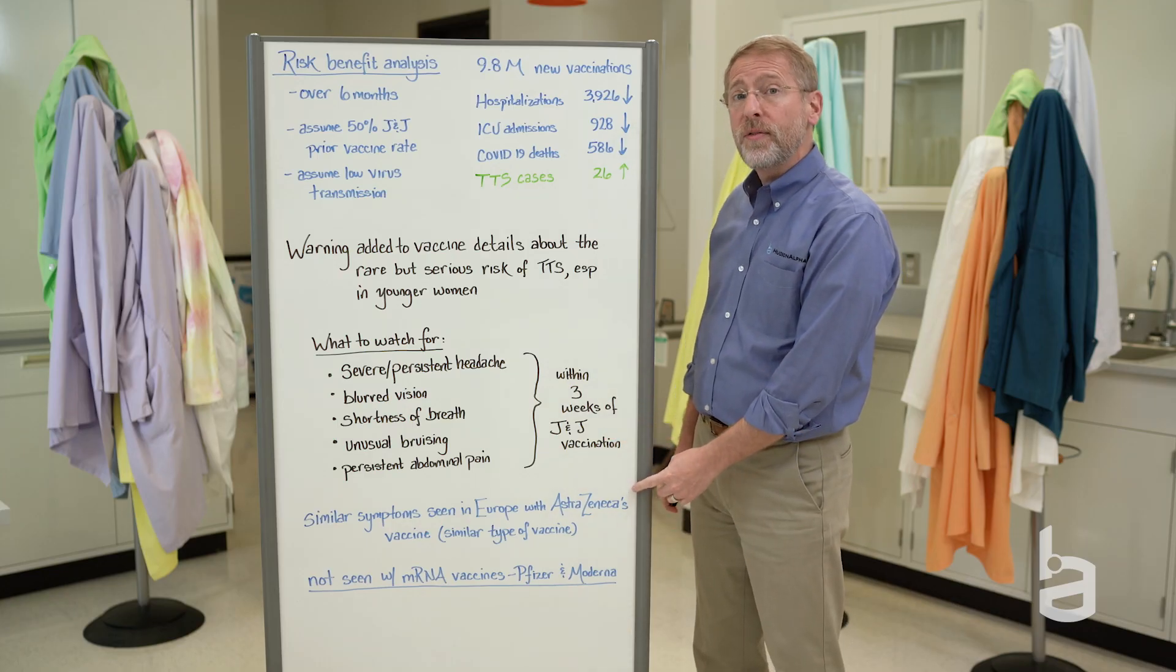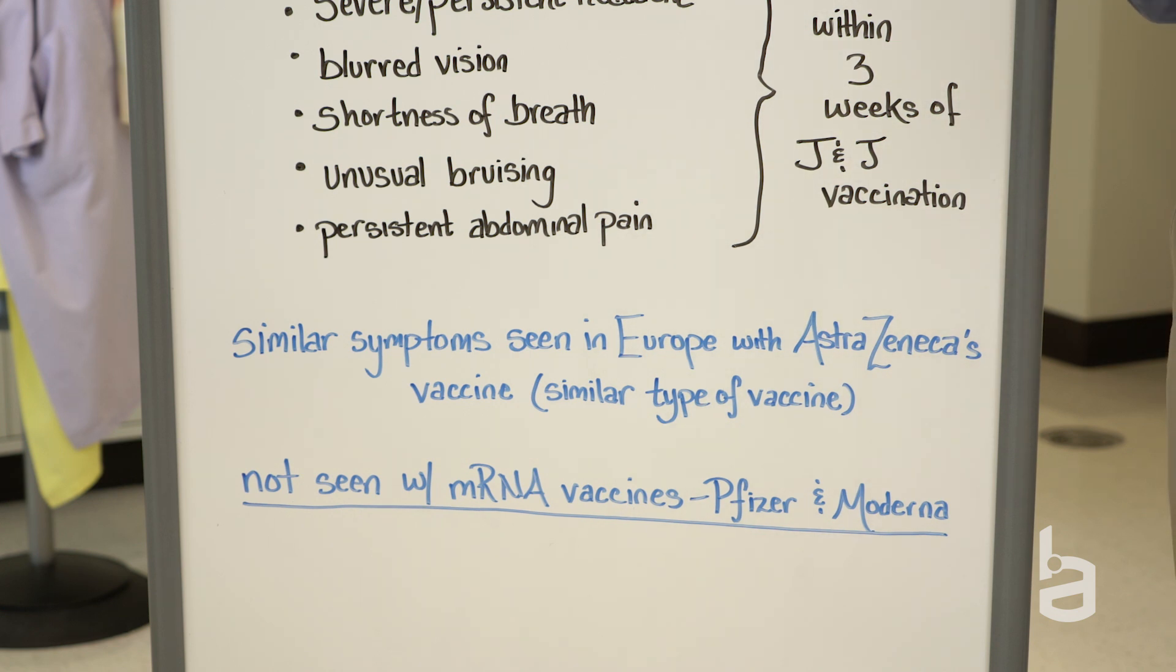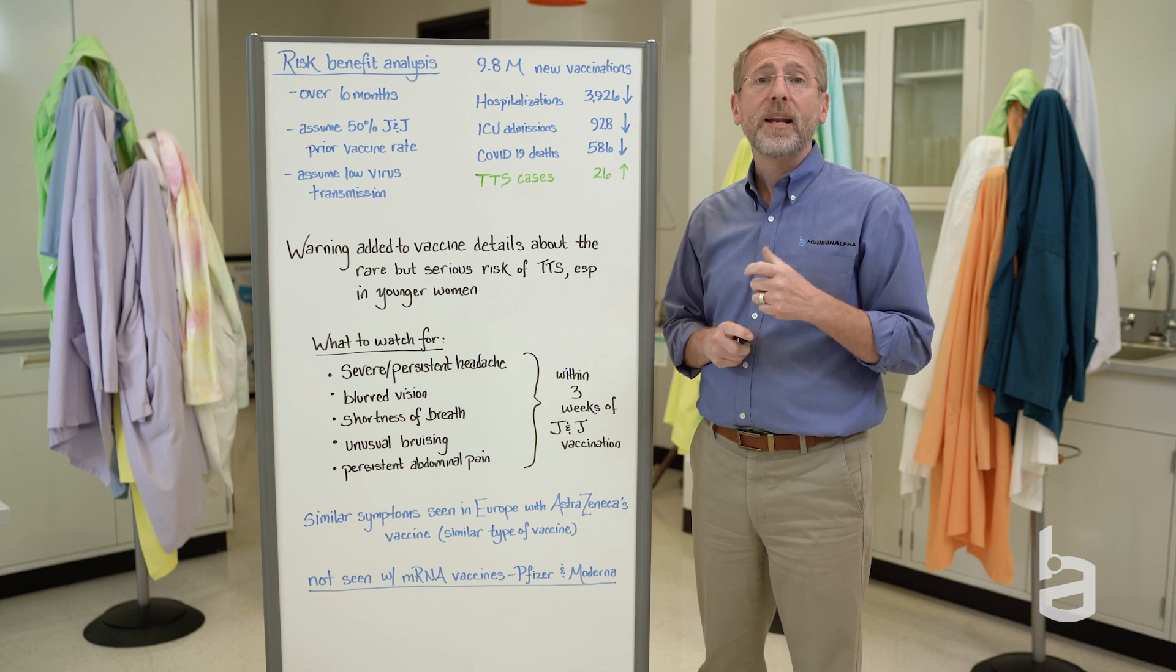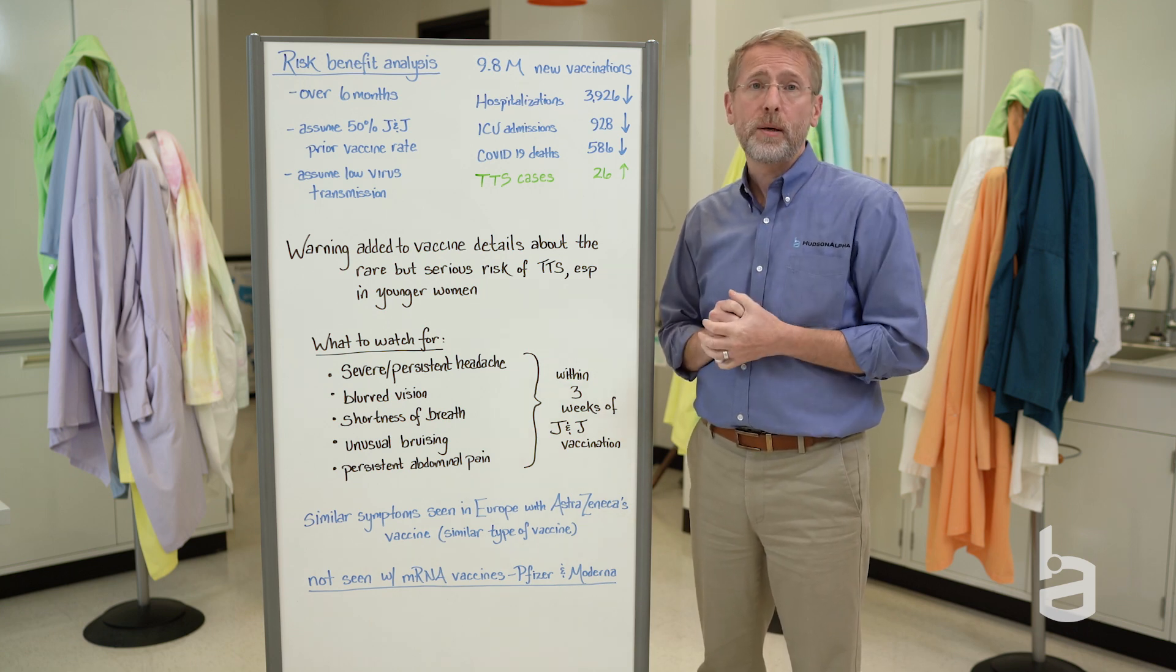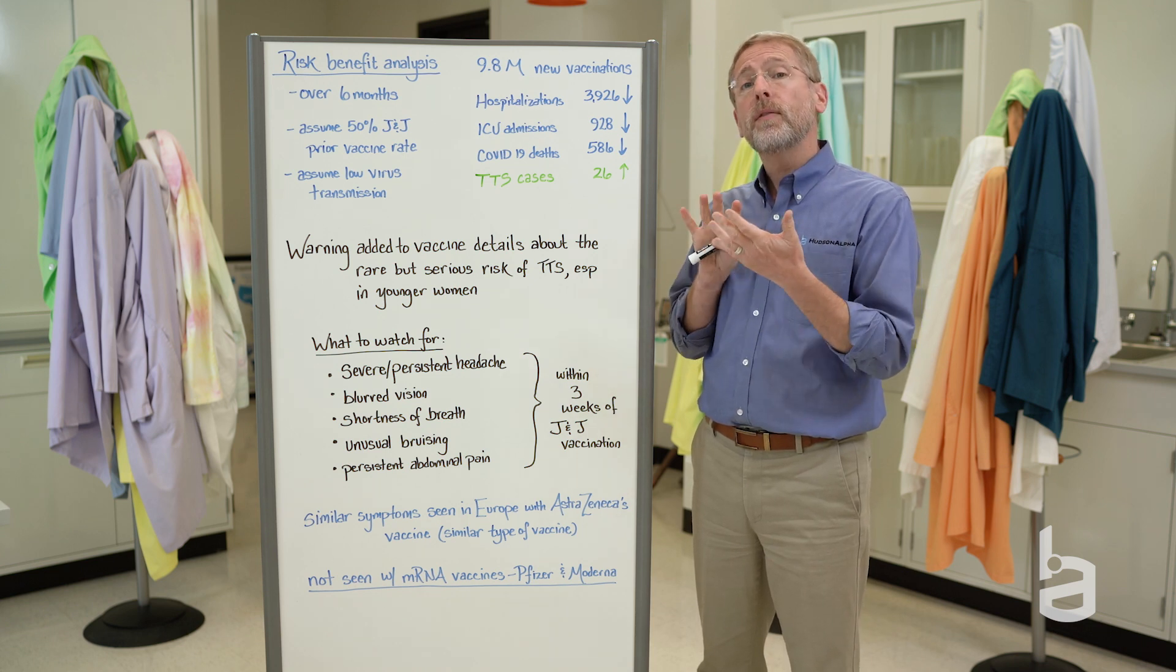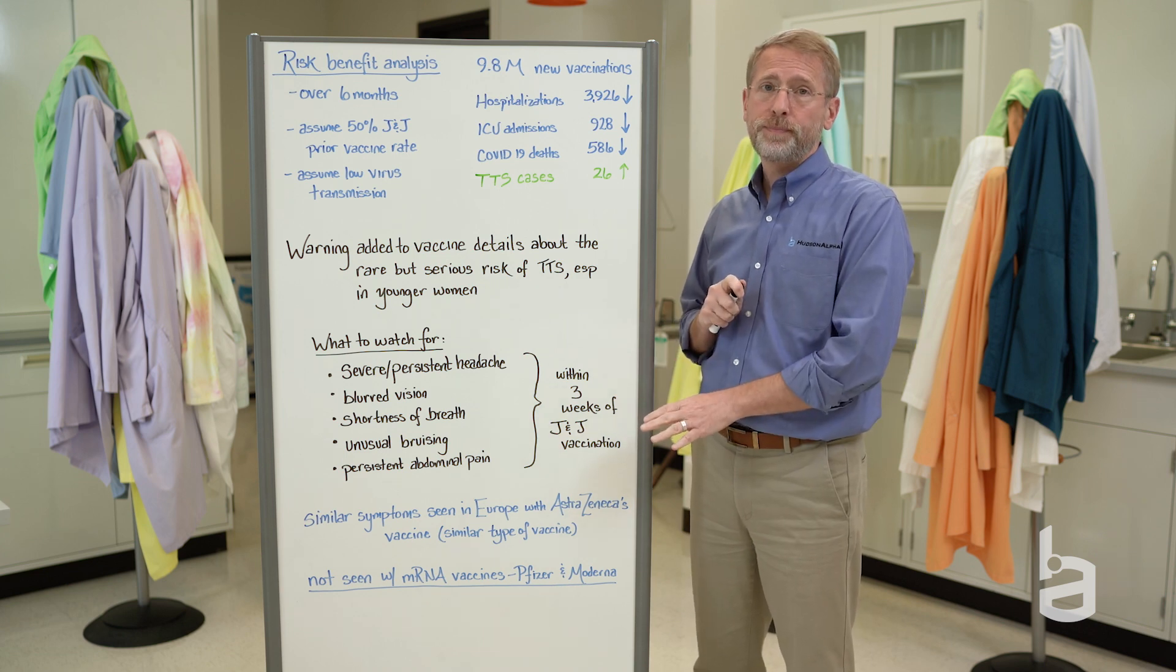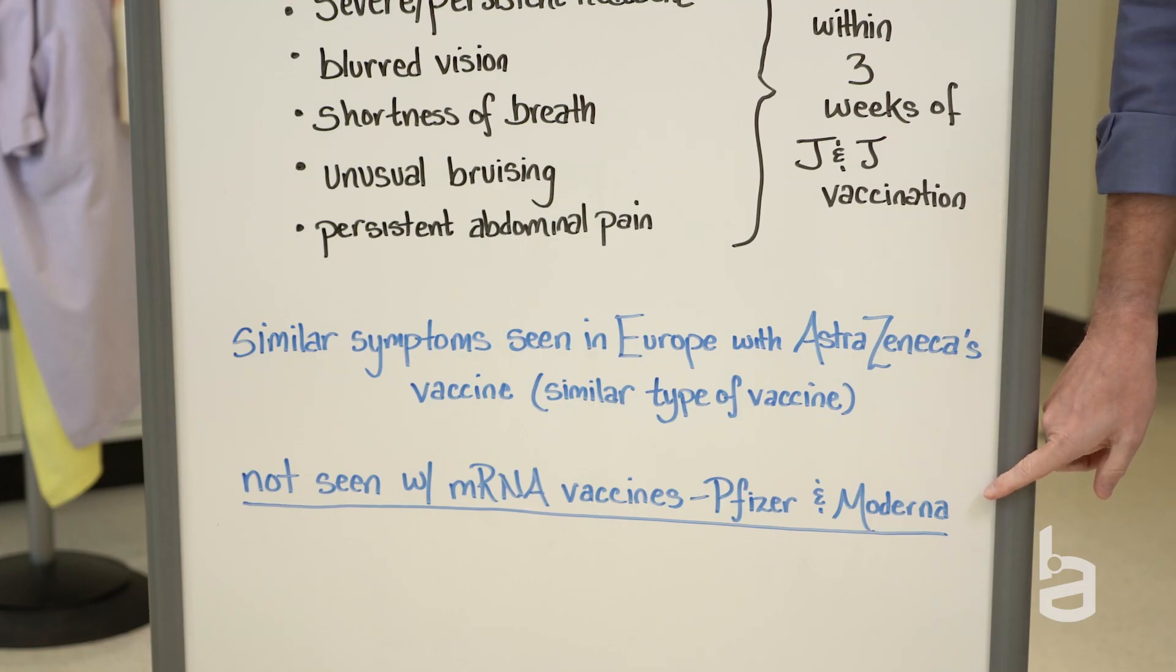As I said earlier, this is similar to the kind of symptoms that you see in Europe with the AstraZeneca vaccine. And Johnson & Johnson and AstraZeneca, their vaccine is built in the same way. It uses an adenovirus to carry the genetic code for the spike protein. So it may be that this is a rare side effect of adenovirus-based vaccines. We'll have to wait and see and gather more information. You don't see this set of side effects with the mRNA vaccines. So there's no evidence of this with the Pfizer or with the Moderna vaccines.